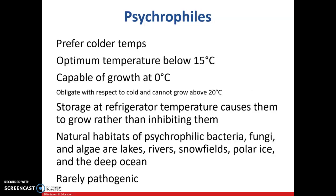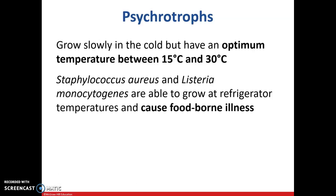Psychrotrophs are not the same as psychrophiles. These grow slowly in the cold but have an optimum temperature between 15 and 30 degrees Celsius. The culprits here are Staphylococcus aureus and Listeria monocytogenes. These are able to grow at refrigerator temperature and are well known for causing foodborne illnesses. Be sure to associate Staphylococcus aureus and Listeria monocytogenes with foodborne illnesses.